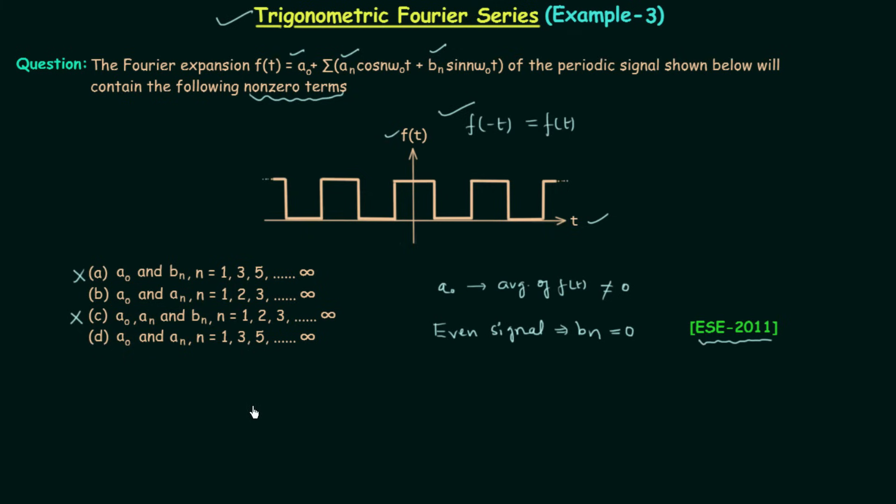Now our answer depends on an. If you see the two remaining options option b and option d you will find an is present. So an is not equal to 0. The only difference is that we have n equal to 1, 2, 3 and so on in option b and n equal to 1, 3, 5 and so on in option d. So in this case both even and odd harmonics are present and in option d only odd harmonics are present.